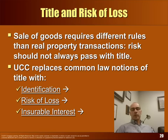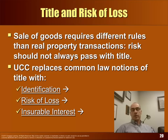The next major part of Chapter 11 is about title and risk of loss. The sale of goods requires different rules than real property law because goods move around, and there is risk associated with passing them from seller to carrier to buyer — the risk may not always pass with title. Common law in this area is replaced by the UCC. The specific concepts we're going to look at are identification, risk of loss, and insurable interest.